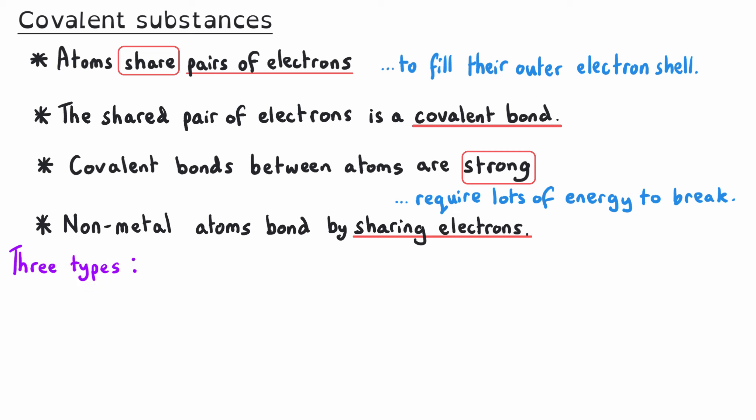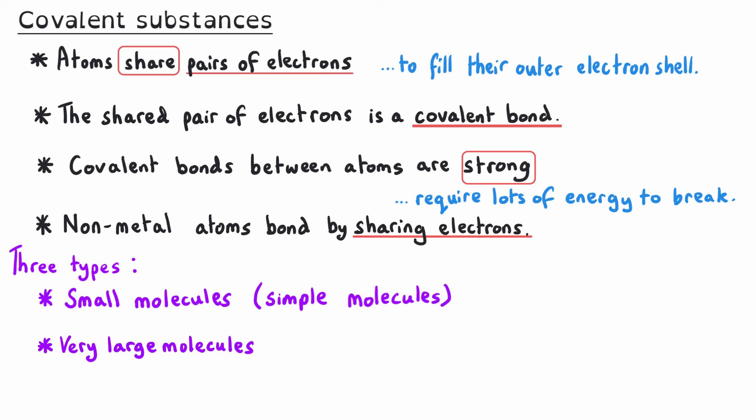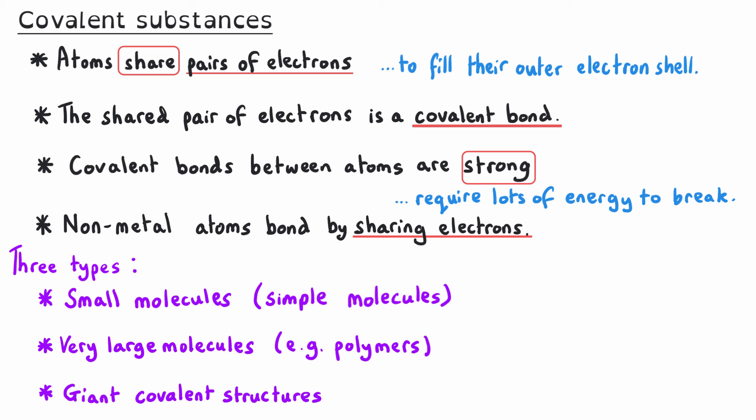There are three different types of covalently bonded substances you need to know about: small molecules, sometimes referred to as simple molecules; very large molecules, such as polymers; and giant covalent structures. The main focus of this video will be small molecules — we will return to the other two in separate videos.